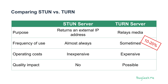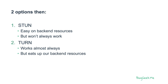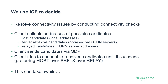The frequency of use of TURN servers is around 15% to 20% of sessions. This will change and vary based on the user base that you have and the actual use cases you're dealing with. So we have two options: STUN, which has an easy backend but doesn't always work; or TURN, which almost always works but eats up backend resources. The way we deal with that is by using ICE — an algorithm that decides whether we're going to use STUN or TURN.